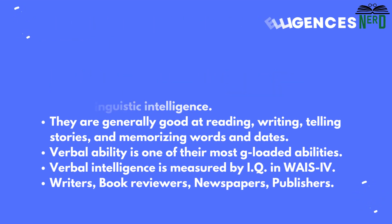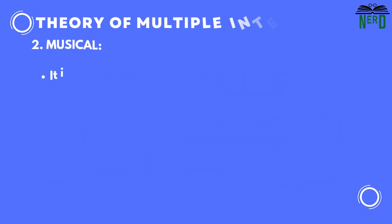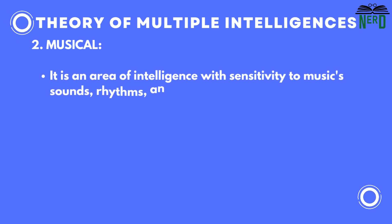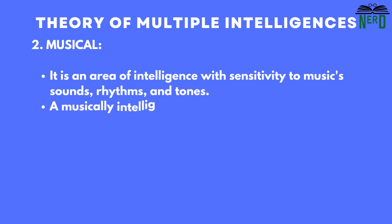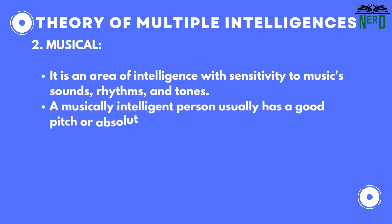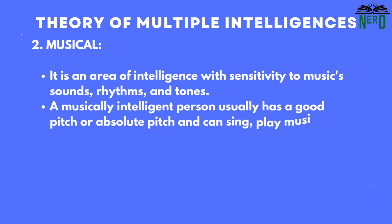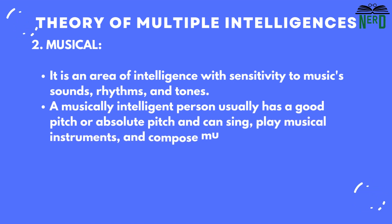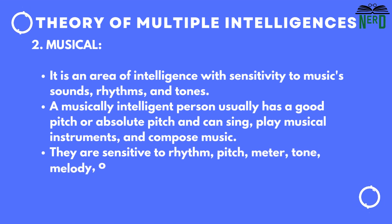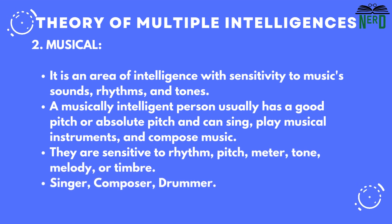Second is musical. It is an area of intelligence with sensitivity to music sounds, rhythms, and tones. A musically intelligent person usually has a good pitch or absolute pitch and can sing, play musical instruments, and compose music. They are sensitive to rhythm, pitch, meter, tone, melody, or timbre. They become singers, composers, and drummers.